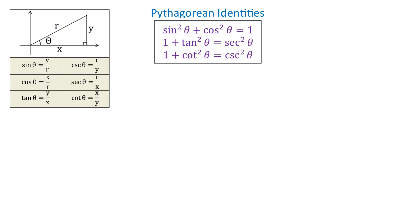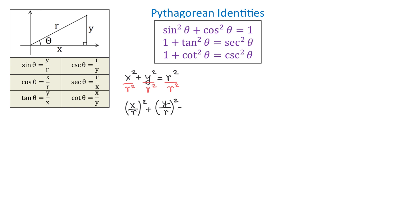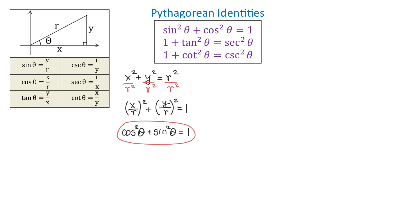To understand these identities, let's recall the Pythagorean theorem. In a right triangle with two sides x and y and hypotenuse r, x squared plus y squared equals r squared. If we divide both sides by r squared, we get x squared over r squared plus y squared over r squared equals 1. We can write this as x over r all squared plus y over r all squared equals 1. Since x over r is cosine of theta and y over r is sine of theta, we get cosine squared of theta plus sine squared of theta equals 1. This is the first identity.